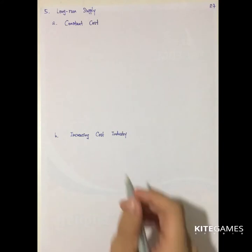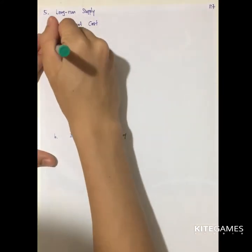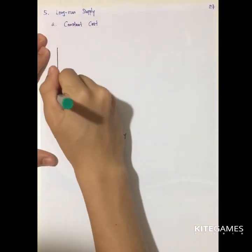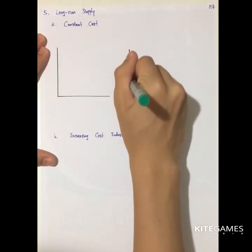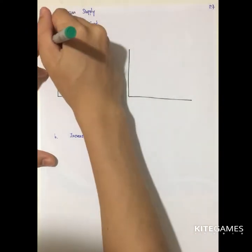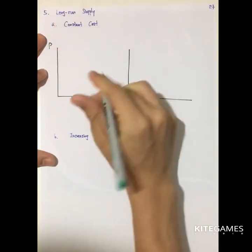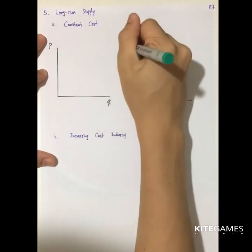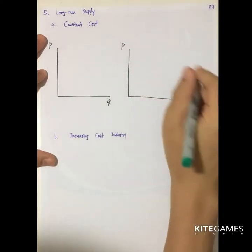The first case is constant cost. To illustrate this, you need to draw a side-by-side diagram. The left-hand side shows the firm output and the right-hand side shows the market demand.